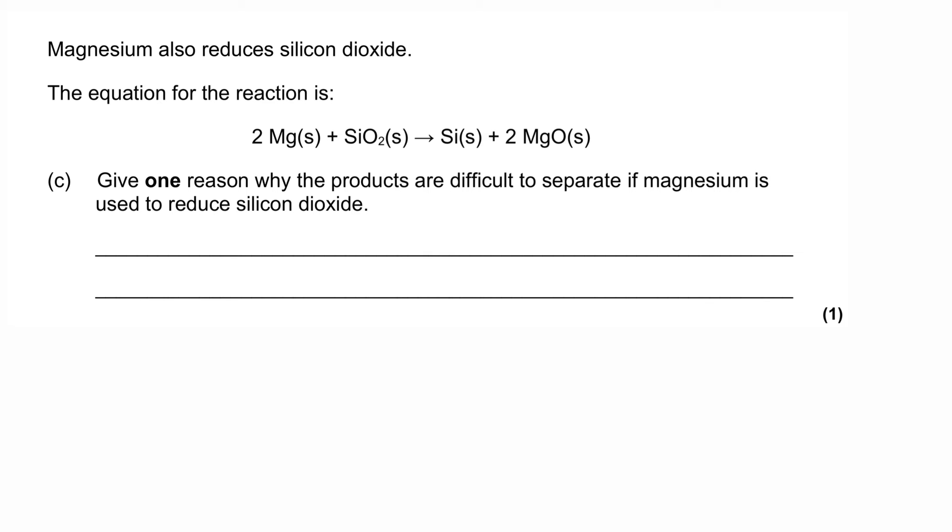Magnesium also reduces silicon dioxide. And the equation for the reaction is 2Mg solid plus SiO2 solid turns into Si solid and 2MgO solid. And so this is very similar to the previous question where carbon was used to remove the oxygen from the silicon dioxide.